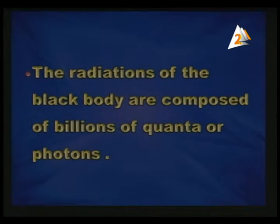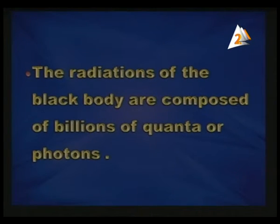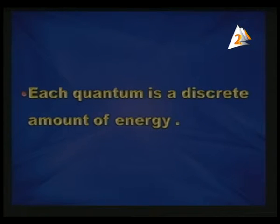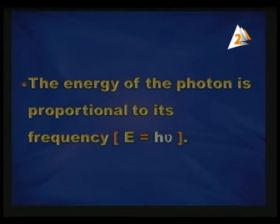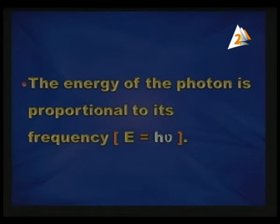The radiations of the black body are composed of billions of quanta, or photons. Each quantum is a discrete amount of energy. The energy of a photon depends on its frequency — it is proportional to its frequency. So the energy of a photon equals Planck's constant H times frequency: E equals h-nu. Photons are packets of energy, and the energy of each photon is determined by its frequency.